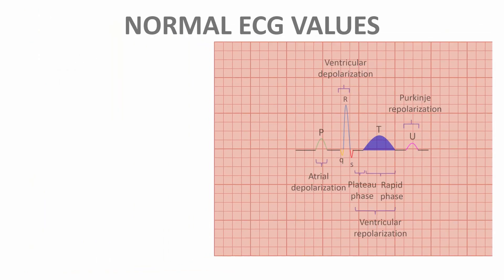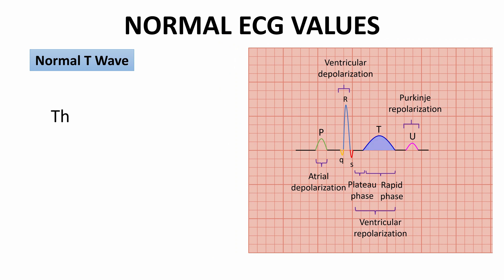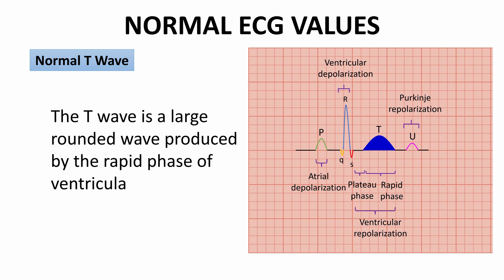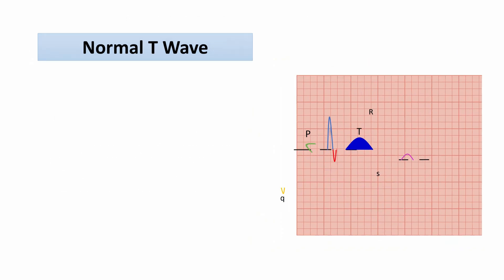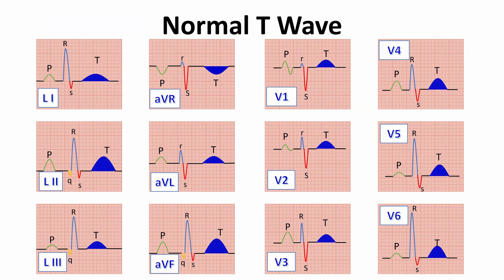The T-wave is a large rounded wave produced by the rapid phase of ventricular repolarization. The T-wave is normally upright in most leads, with certain exceptions. It is invariably inverted in lead AVR, along with inversion of the P-wave and QRS complex.